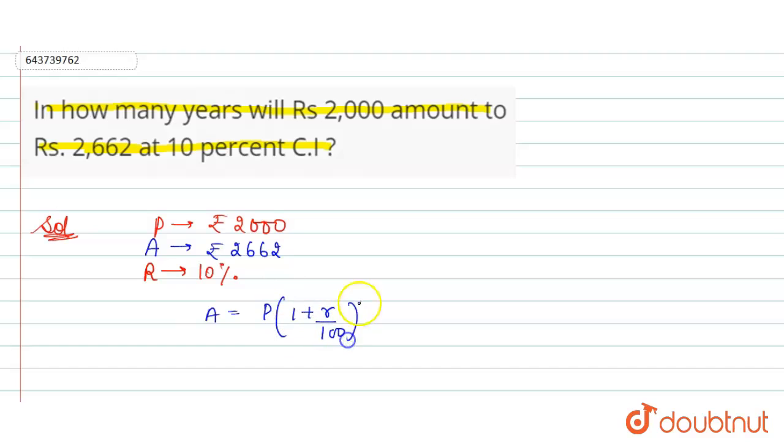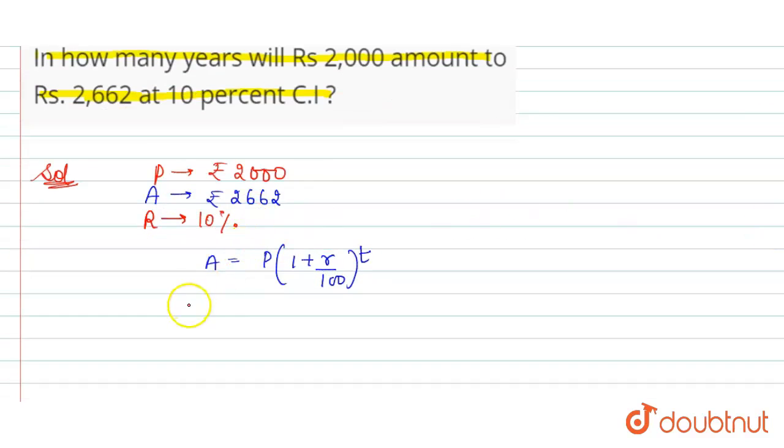Now put the values here, so amount equals rupees 2662, principal is rupees 2000 times (1 plus 10 divided by 100) raised to power t.